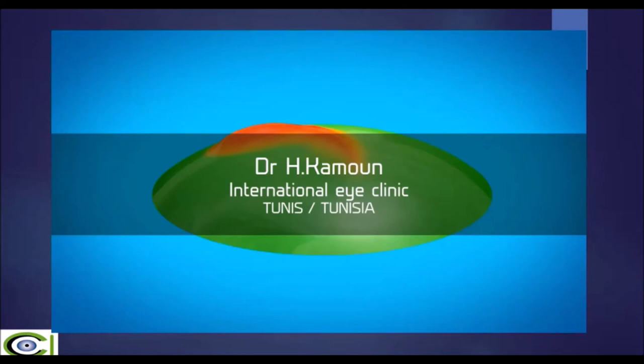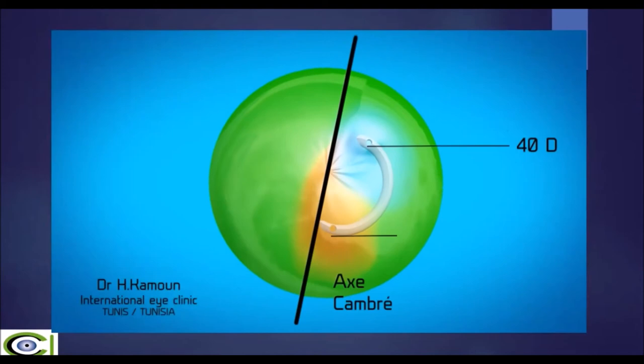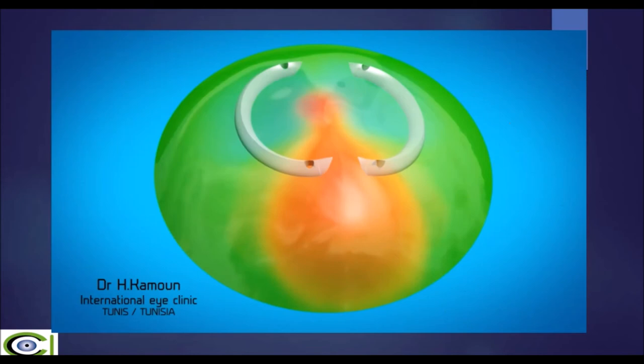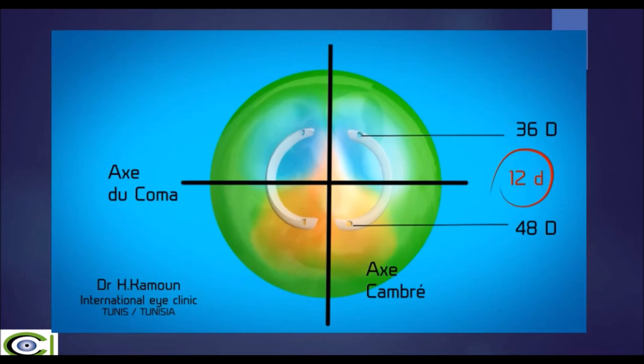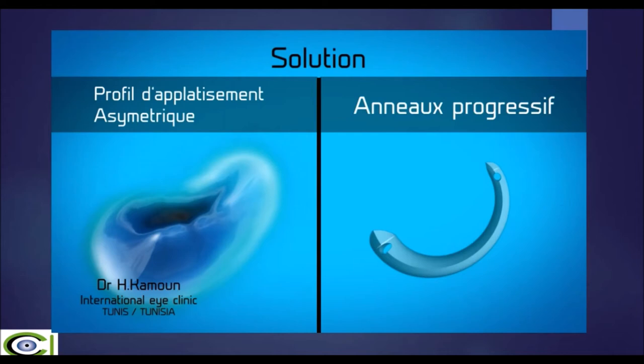In a duck morphology, placing the ring on the steepest axis corrects astigmatism but not coma aberrations. Similarly, in a snowman morphology with coma aberration and no coincidence between the topographic and coma axis, placing the ring on the steepest axis corrects astigmatism but not coma. The solution in these challenging cases is progressive rings.